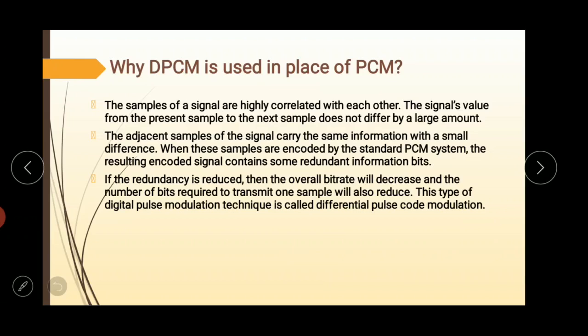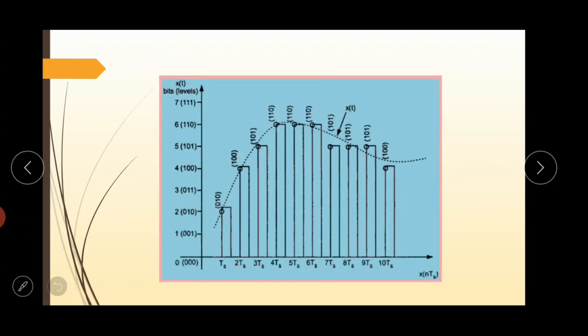When these samples are encoded by a PCM system, the resulting encoded signal contains some redundant information, means repetitive information. Let's see this diagram. In this diagram, dotted line represents the continuous time signal.